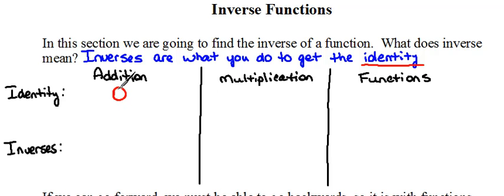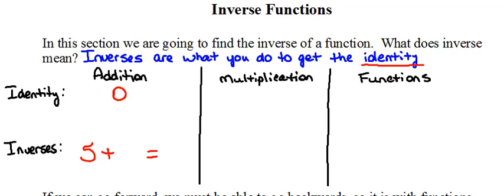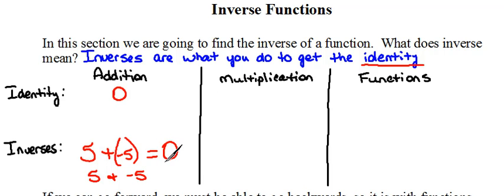Once we understand what the identity is, we can figure out how inverses work. Remember, inverses are what you do to get the identity. So think about the number five — what would you have to add to five in order to get the identity of zero? That would have to be negative five. So five and negative five are inverses of each other, because they add up to give the additive identity of zero.